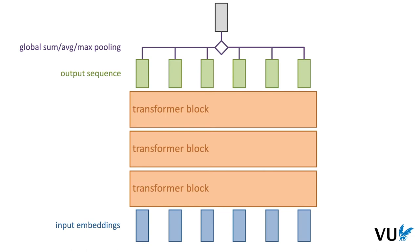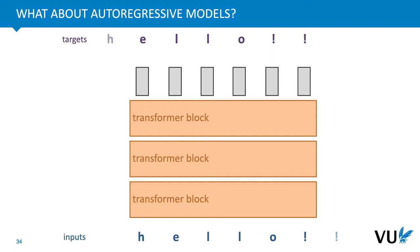With our transformer block in place, we can start defining transformers. Here's a very simple example of a sequence-to-label transformer: we take some input embeddings, feed them through a stack of transformer blocks, get an output sequence, do some global pooling, and get a single output vector that we can transform into our output label. This works for all sequence-based tasks — sequence-to-label, label-to-sequence, and sequence-to-sequence — with one exception: the autoregressive model, which is a sequence-to-sequence task.